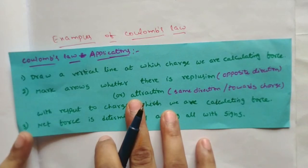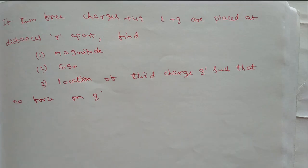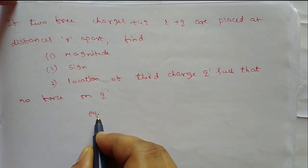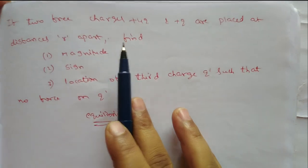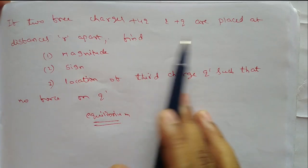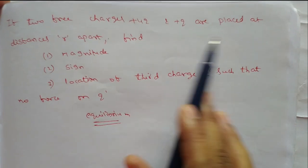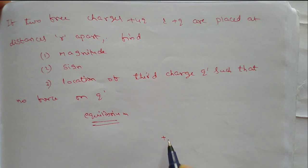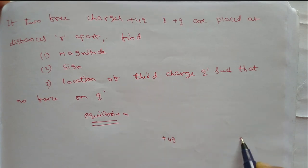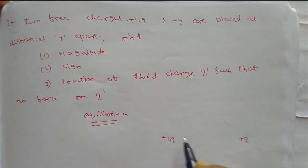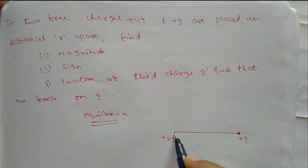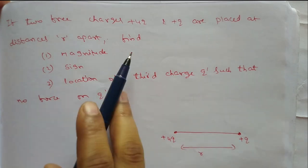Welcome to ARCA foundation classes. This problem is based on equilibrium. Two free charges, plus 4q and plus q, are placed at a distance r apart. Here the plus 4q charge is on one side and the plus q charge is on the other side, with the distance between these two charges being r.